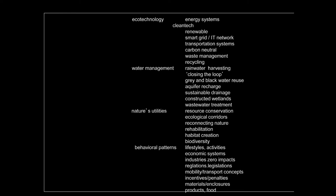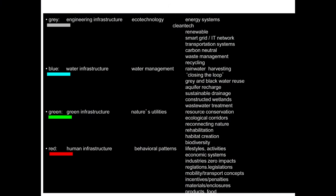I started to colour-code them. I called engineering grey, I called water blue, nature's infrastructure is green, and lifestyle is red, because that's the colour of blood. Our engineering systems have to be clean technology, low carbon and carbon neutral.